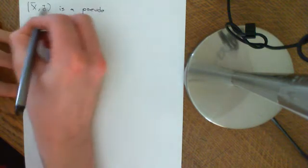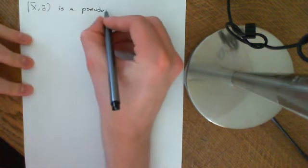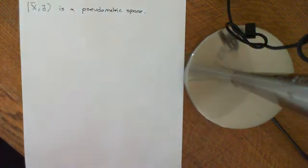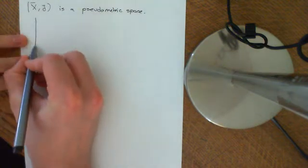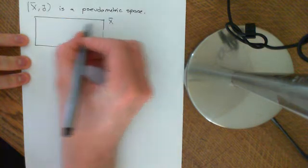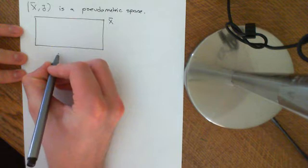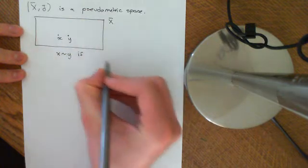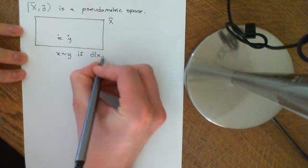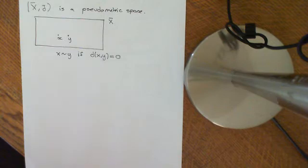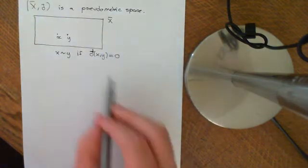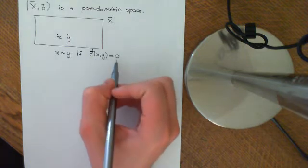I'm putting the bars there to denote that it's a pseudo-metric space and not a normal metric space, though it's not common notation. So (X̄, d̄) is a pseudo-metric space, and what we want to do is define an equivalence relation on this set X̄. If we take two elements x and y in X̄, I want x to be related to y if the pseudo-metric distance d̄(x, y) is equal to zero.